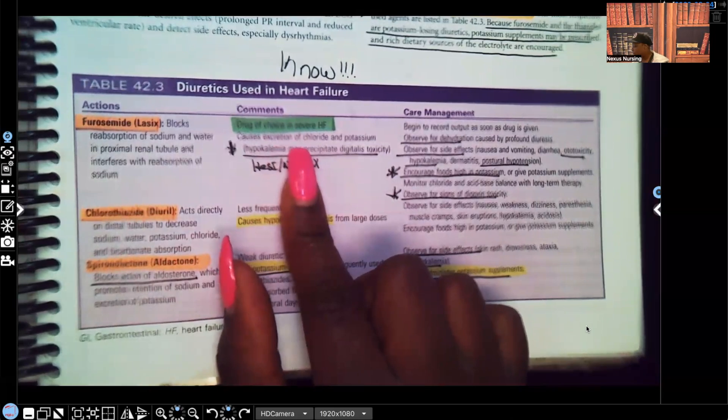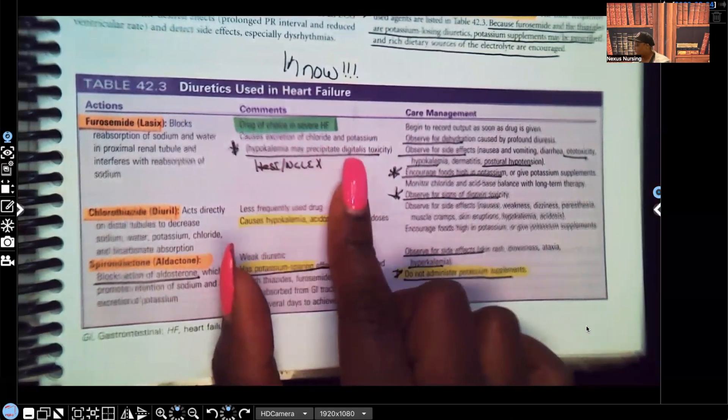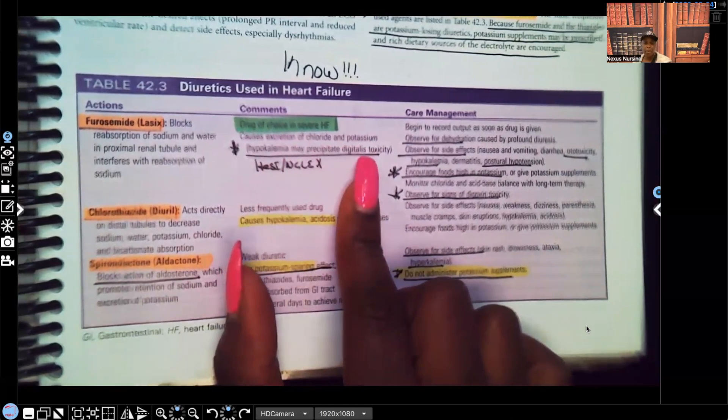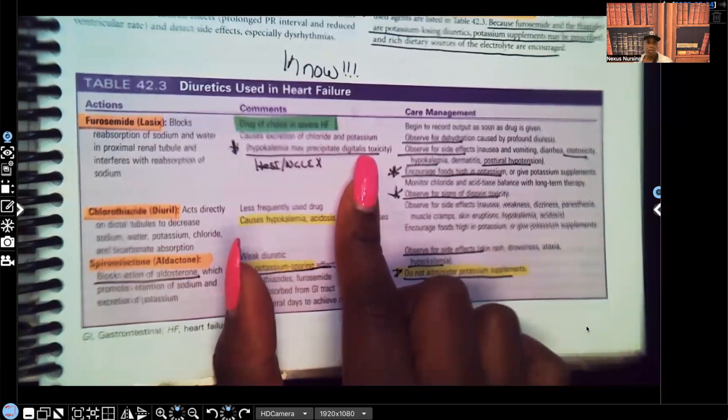When you guys are studying, whenever you see something is the drug of choice or is the treatment of choice, it's important for you to know. So when it comes to that pediatric patient with heart failure, what's our drug of choice? Furosemide, Lasix, that is the drug of choice in severe heart failure. It causes excretion of chloride and potassium. Look what they put in parentheses: hypokalemia may precipitate digitalis toxicity. Very important for you guys to know. That's on HESI, that's on Eclipse, that's on ATI.